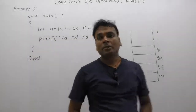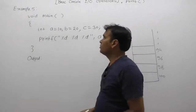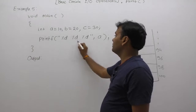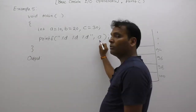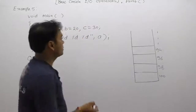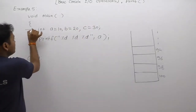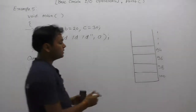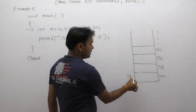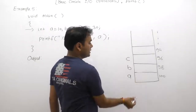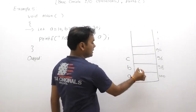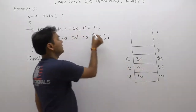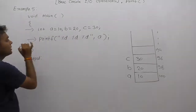Now let's see the next example. This example is almost similar to example 7. Here we are supplying format specifier three times, but supplying only variable a. We are processing this example line by line. According to the first statement, we are declaring three variables a, b, c, allocating memory space for a, b, c. Then a is initialized by 10, b is initialized by 20, c is initialized by 30.